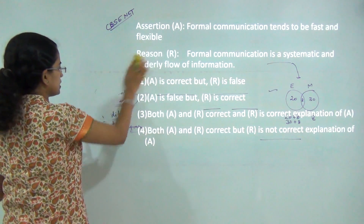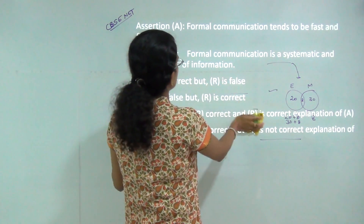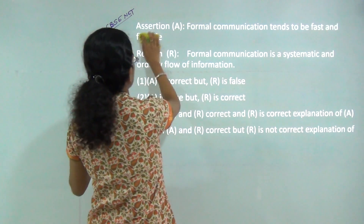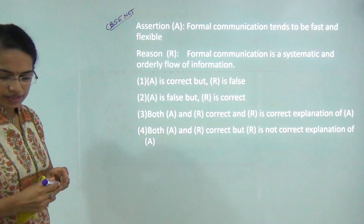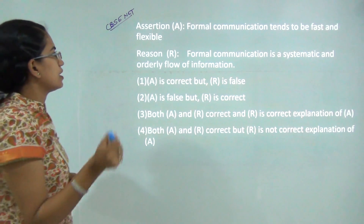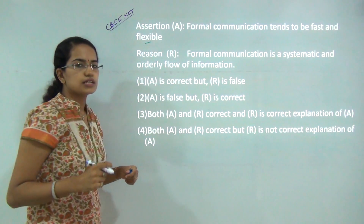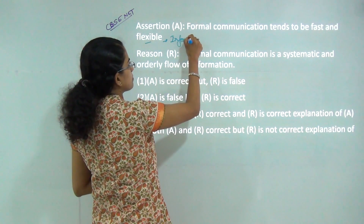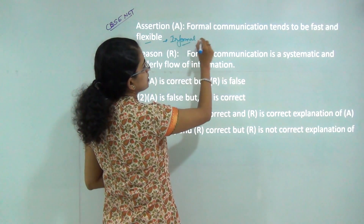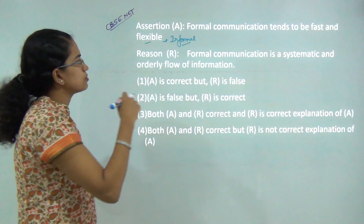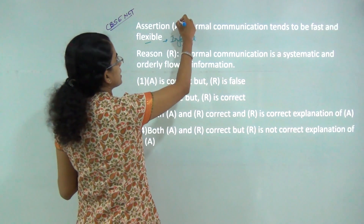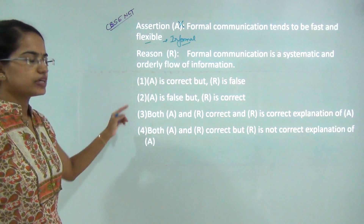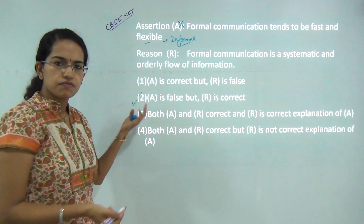The next question is based on assertion and reason. Let's talk about the first statement: formal communication tends to be fast and flexible. This is incorrect, because the communication that is fast and flexible spreads through word of mouth, which is known as informal or grapevine communication. So formal communication is not fast and flexible — statement A is incorrect, so the answer should be B.